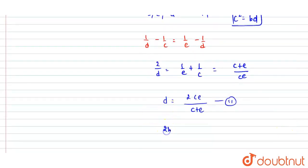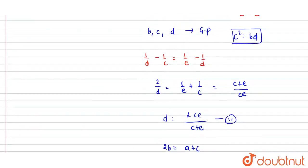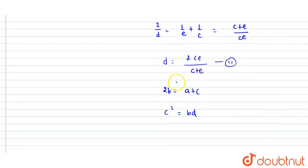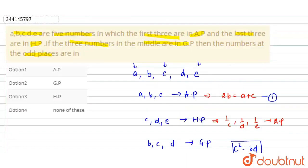Now the third equation: BCD are in GP, means that C² is equal to BD. So these are three equations. 2B is equal to A+C, and C² is equal to BD. BD is equal to C² divided by B.